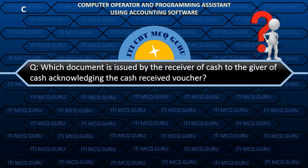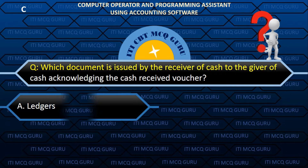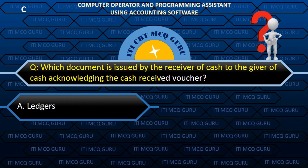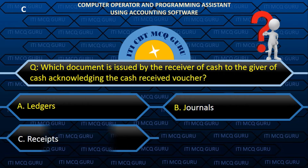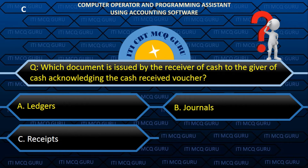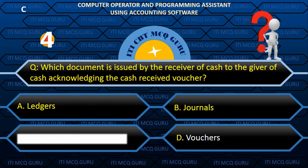Which document is issued by the receiver of cash to the giver of cash, acknowledging the cash received? C. Receipt.